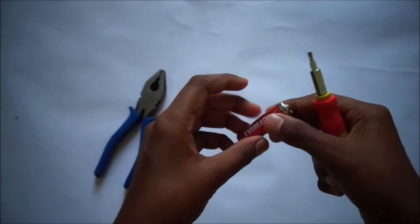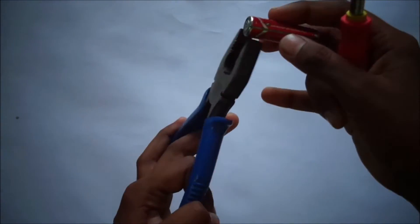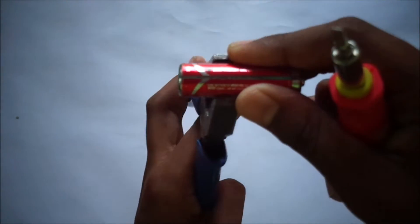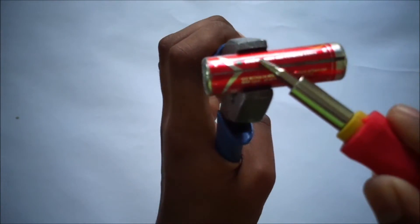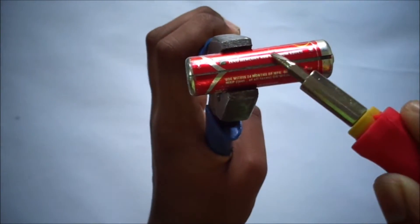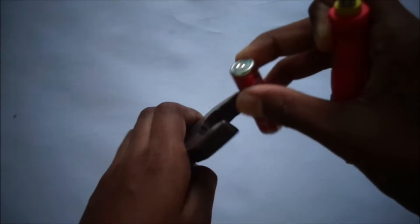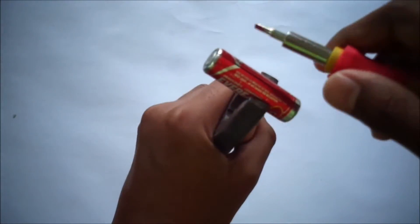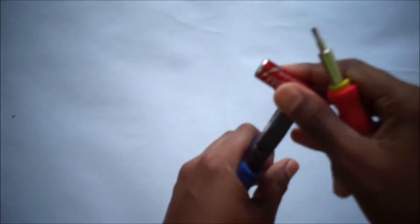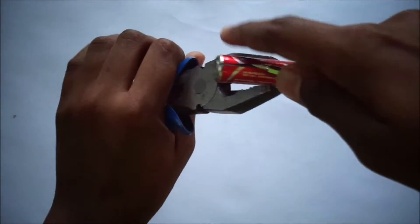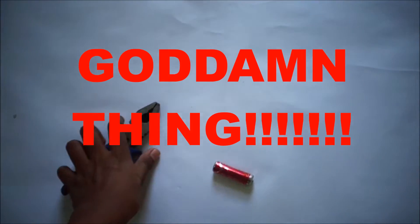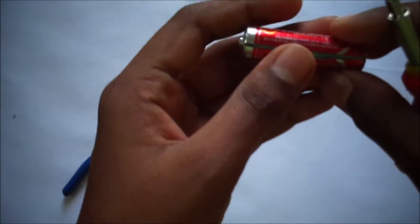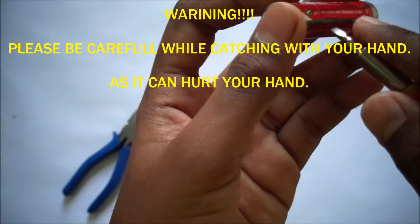Now I'll catch the battery like this where this hole is properly visible. We'll try it once more, catch it firmly. It's okay if you want you can use the plier, I'm using my hand itself.